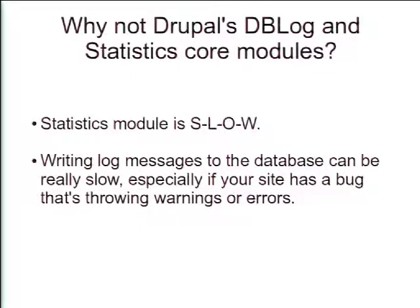So why not use Drupal's database log or the core statistics module? It's really slow on a larger site getting a lot of traffic — that's more stuff you're having Drupal do, more times you're hitting the database, and if you're hitting the database you're probably hitting disk. It can get really slow if, say, you set up something with Rules where you're looping over a set of line items on a Drupal Commerce order and you maybe messed up and had something that threw a little error. Suddenly you've got 20, 30, 50, or 100 pages worth of errors in the Drupal database log.